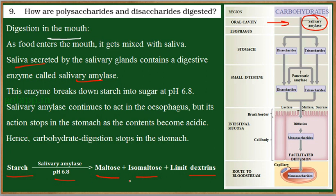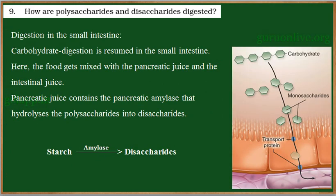That means it is not completely reduced to its monomers. The complete digestion takes place in the small intestine. The partially digested carbohydrates enter into the small intestine, which has both pancreatic juice and intestinal juice.